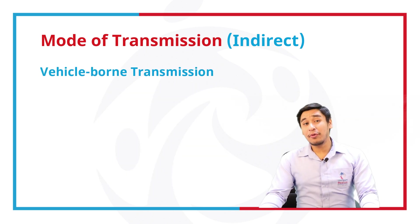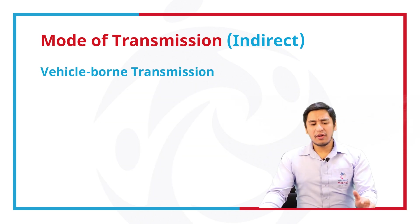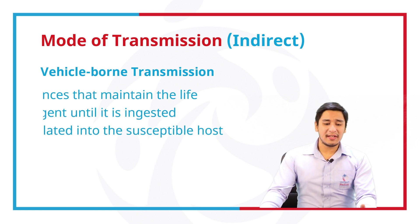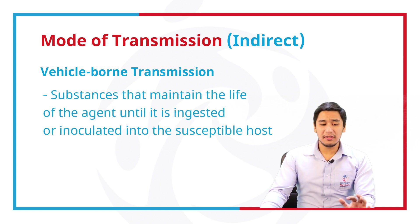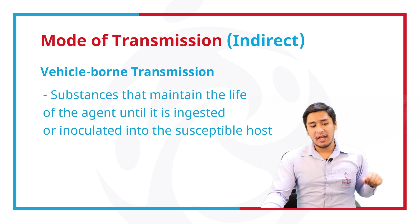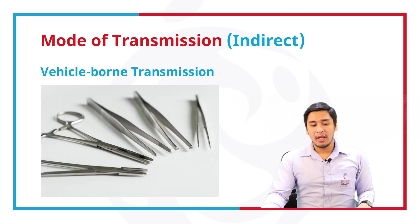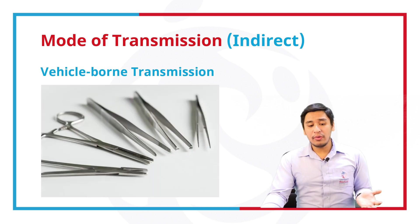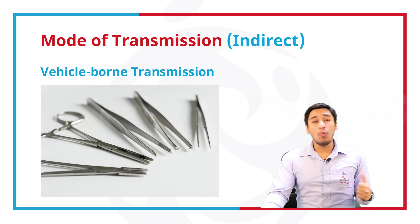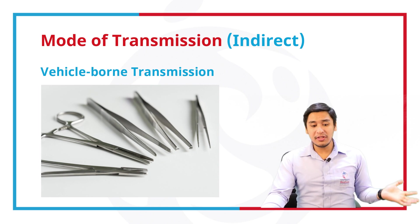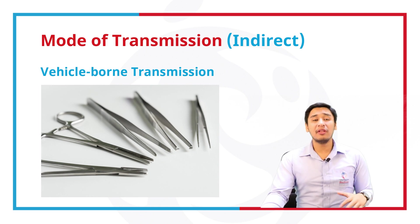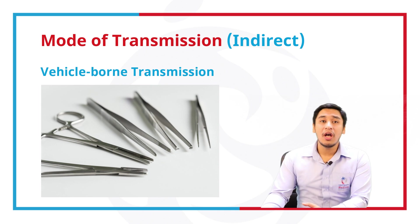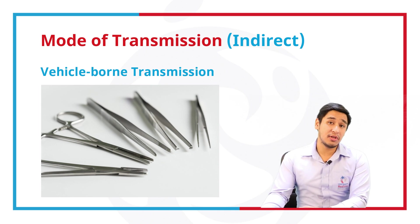Vehicle-borne transmission. These are substances that maintain the life of an agent until it is ingested or inoculated into the susceptible host. Soil, clothes, eating utensils, water, food, milk, surgical instruments, and blood or biological products are usually the cause of vehicle-borne transmission.